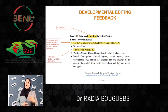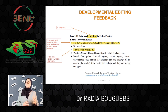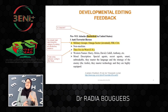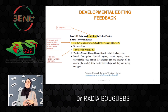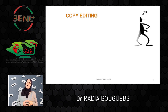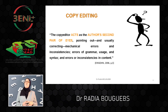Another type of editing is copy editing. The copy editor acts as a second pair of eyes for the author on that document, pointing out problems like correcting mechanical errors, inconsistencies, errors of grammar, usage, and syntax. Copy editing feedback addresses correcting grammar, spelling, and punctuation errors.